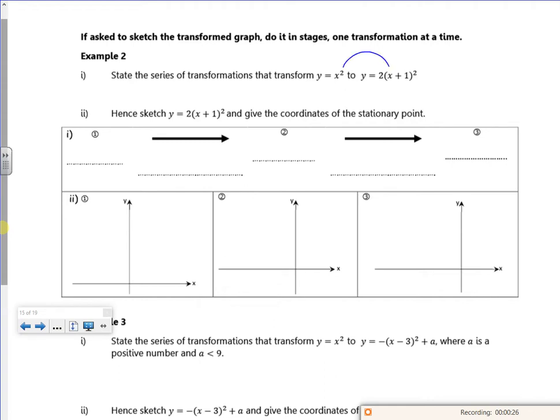So I know to get from x squared to 2 lots of x plus 1, I've got a translation of minus 1, 0 and I've also got a stretch scale factor 2 in the y direction.